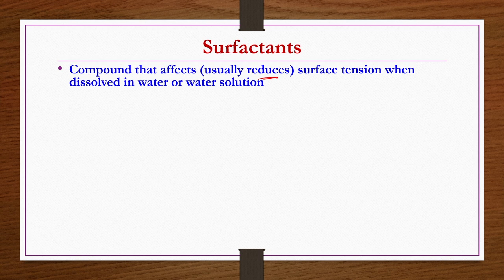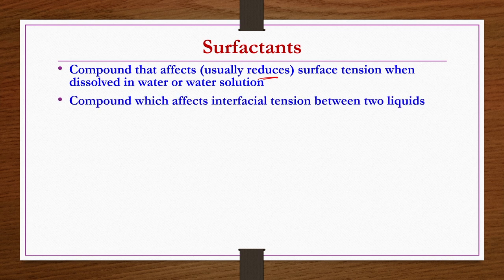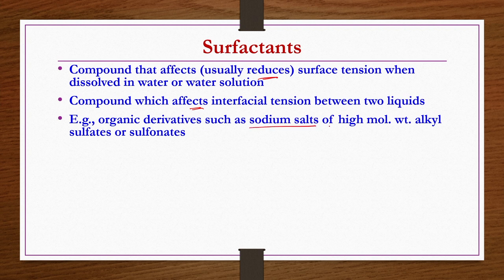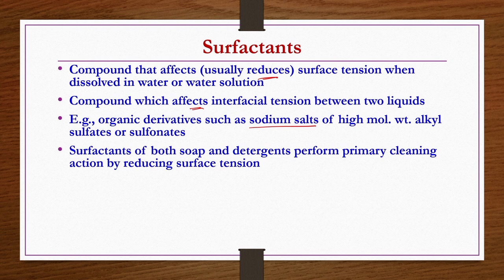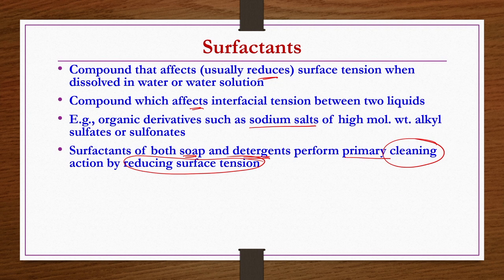A surfactant is a component that affects — usually reduces — surface tension when dissolved in water or aqueous solutions. In the case of two immiscible liquids, a surfactant also affects the interfacial tension between them. Examples are organic derivatives such as sodium salts of high molecular weight alkyl sulfates or sulfonates. Surfactants in both soap and detergents perform primarily the cleaning action by reducing the surface tension. Colloidal chemistry principles are very much essential for understanding surfactants.